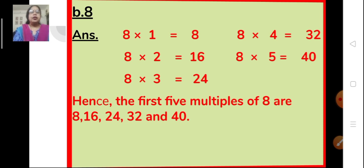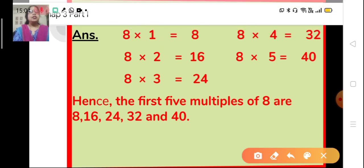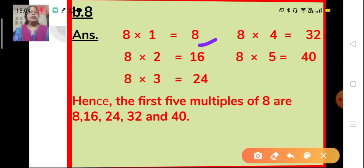The next problem is 8 — write the first 5 multiples of 8. Similarly, we write the multiplication table of 8 up to 5 times. So 8×1=8, 8×2=16, 8×3=24, 8×4=32 and 8×5=40. These are the first 5 multiples of 8.